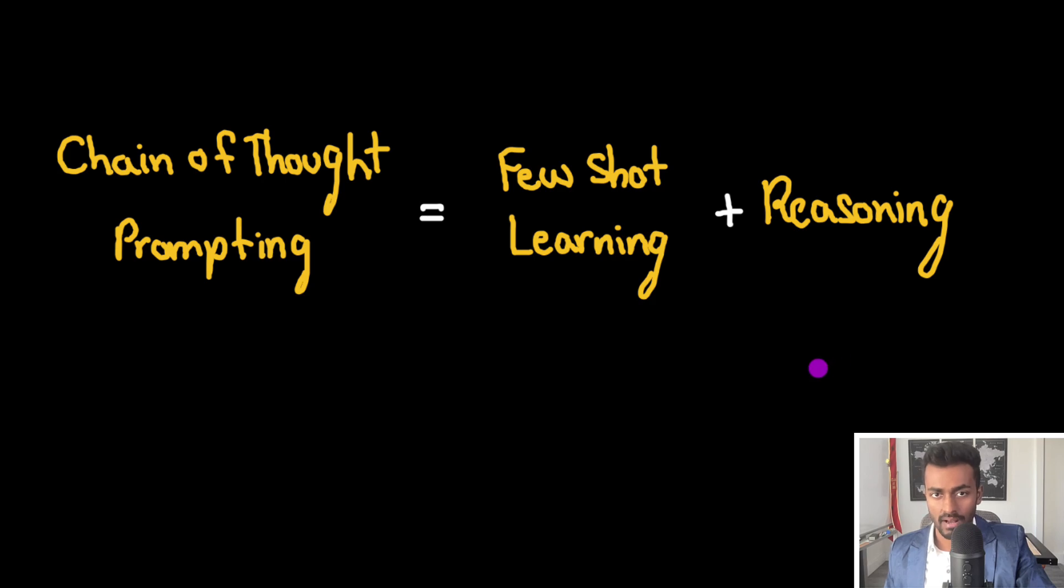So chain of thought prompting is essentially the combination of two main concepts, which is few shot learning, as well as reasoning. Let's talk about each of these starting with few shot learning.